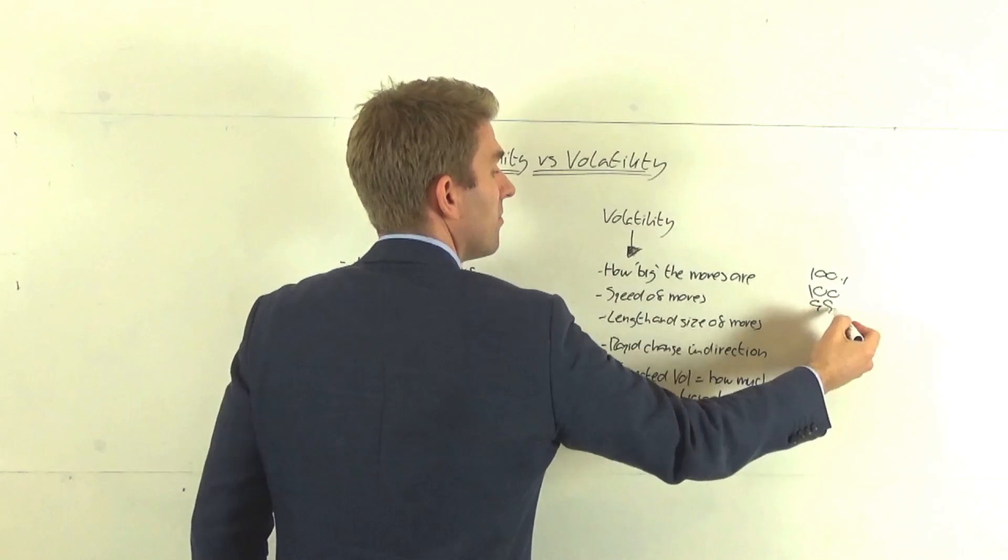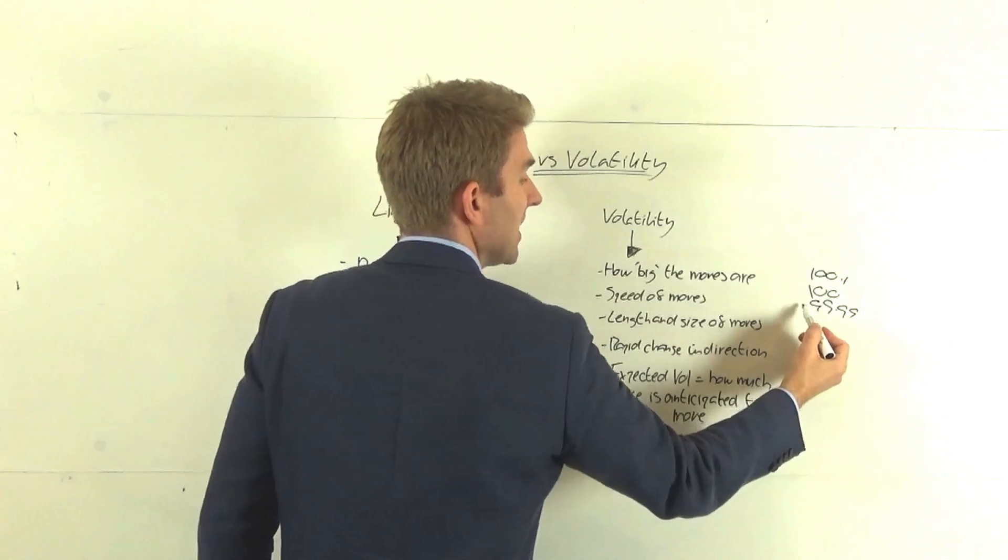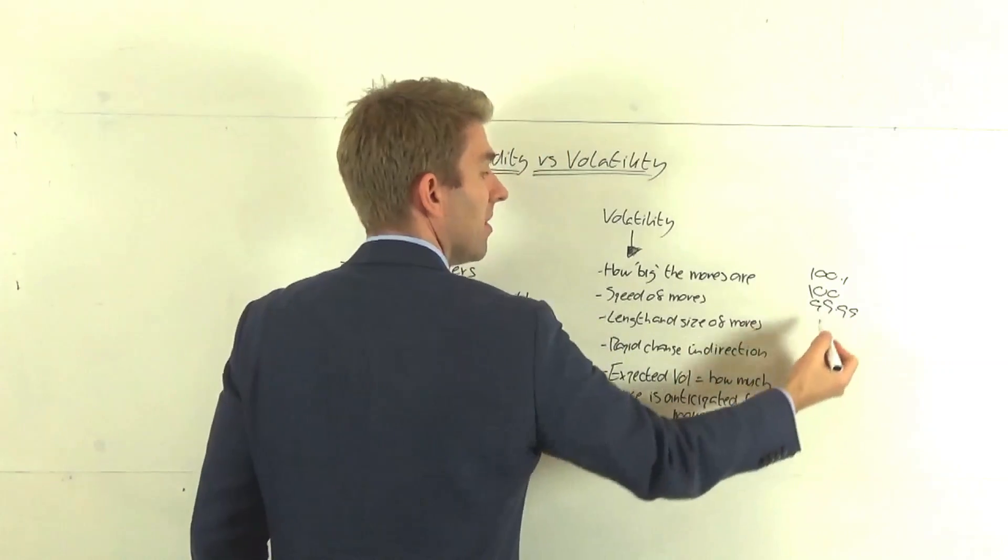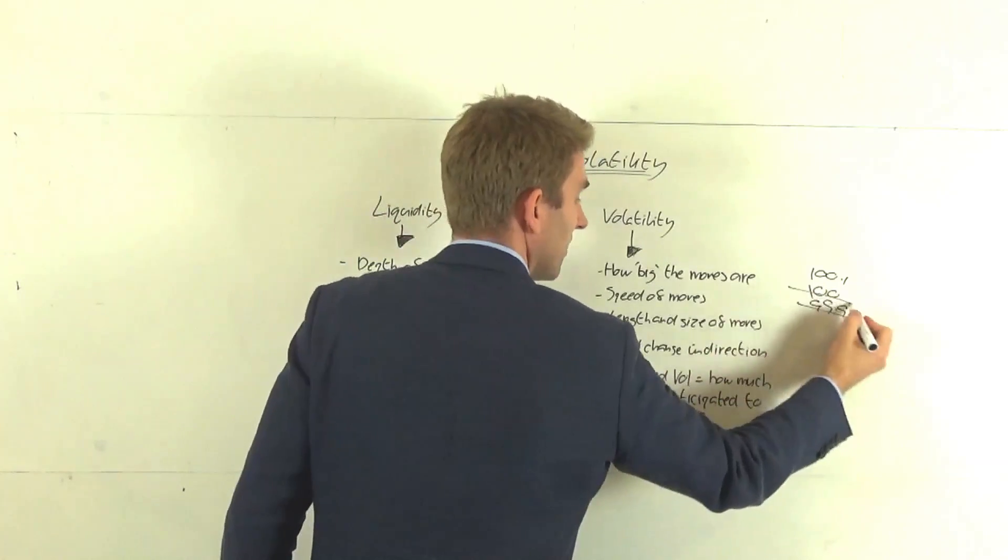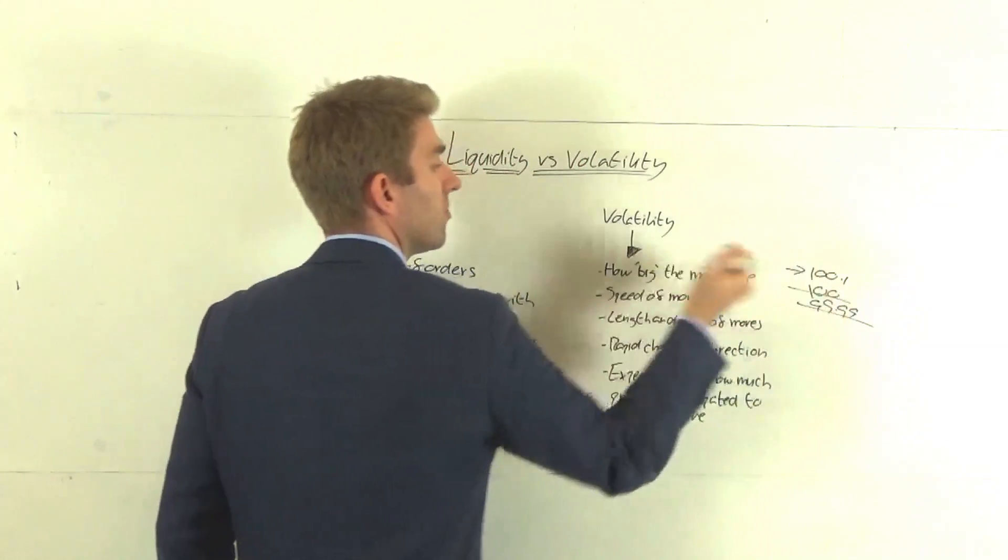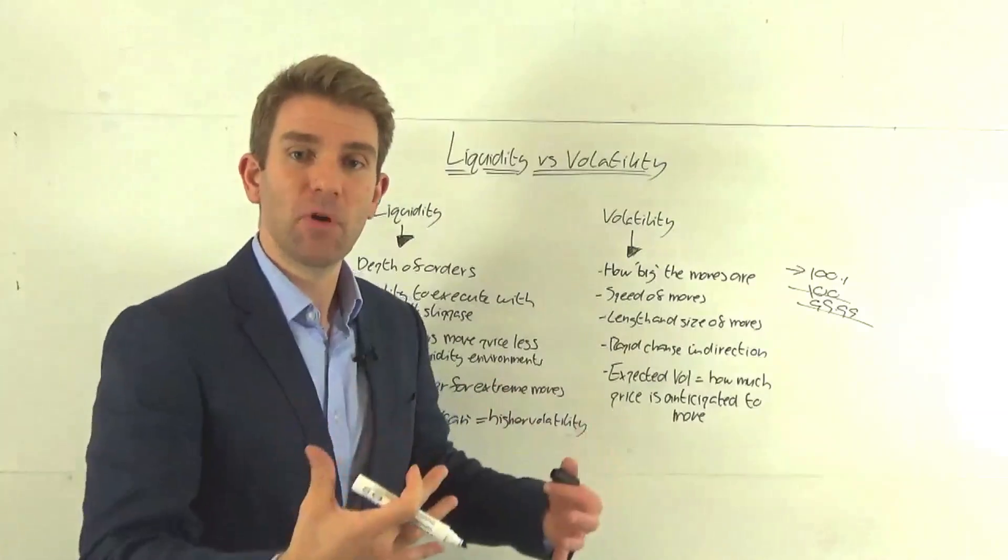And we know that when we sit on the board, let's say we're buying here, we've got a price here, we've got another price level here, 100.1. When we move price, let's go 99. When we take out these levels, if we're buying at market, we're buying everything at 99, everything at 100, we're buying a little bit at 100.1. That's what moves price.